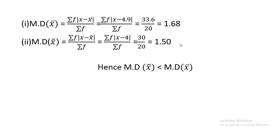When you talk about measures of central tendency — mean, median, and mode — the median always lies between mean and mode. So median deviation will be smaller than mean deviation. I hope you have understood how to calculate mean deviation about mean and mean deviation about median for simple frequency distribution. Thank you so much.